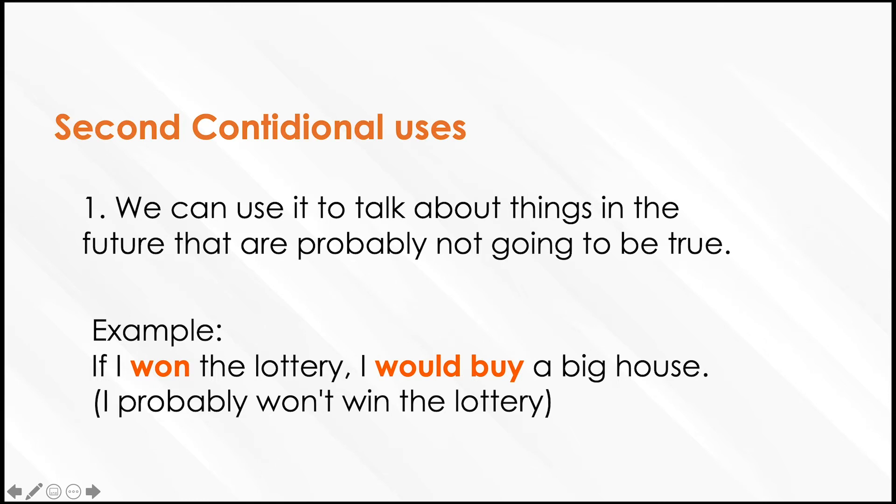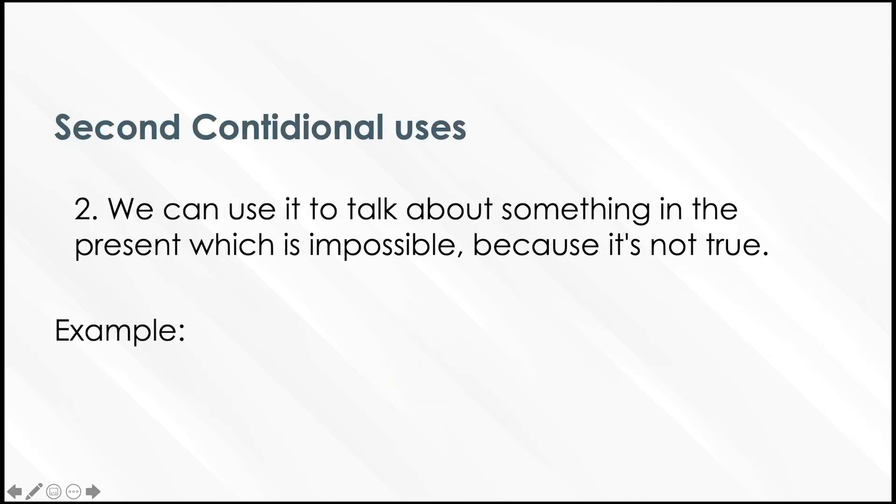The second conditional use, o un segundo uso de este segundo condicional es, we can use it to talk about something in the present which is impossible, because it's not true. Lo podemos utilizar para hablar en presente, pero que es un imposible, porque no es verdadero.